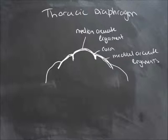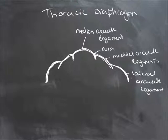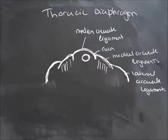Then we have another two, called the lateral arcuate ligaments, and these pass over another muscle called quadratus lumborum. So this is how the diaphragm is attached to the lumbar region through these ligaments and crura: the median arcuate ligament arches over the aorta, then the two crura, then the medial arcuate ligaments passing over psoas major and minor, and the lateral arcuate ligaments passing over quadratus lumborum.